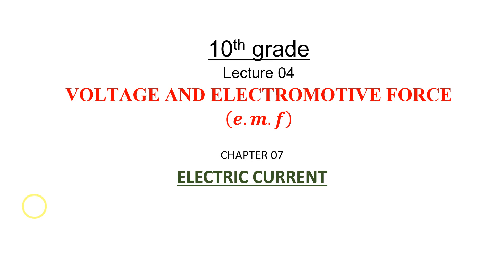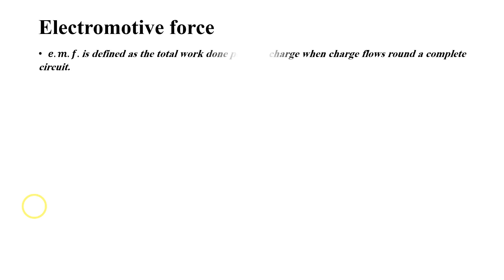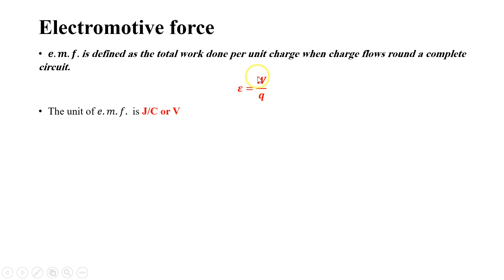What is electromotive force? Electromotive force is defined as the total work done per unit charge when charge flows around a complete circuit. Whenever we want to move the charge around a complete circuit, the energy required — the total work done — is what we call electromotive force.